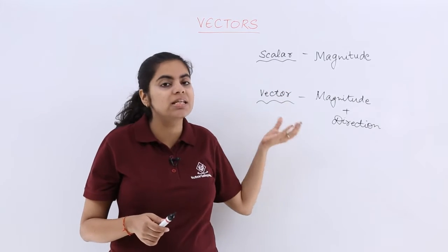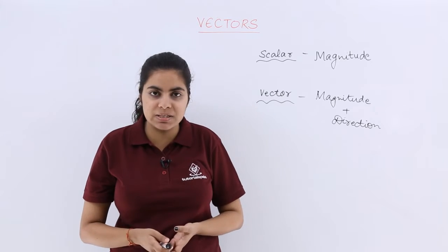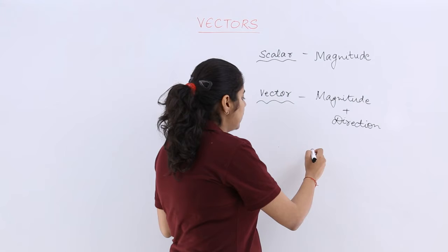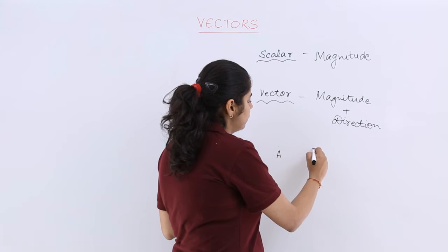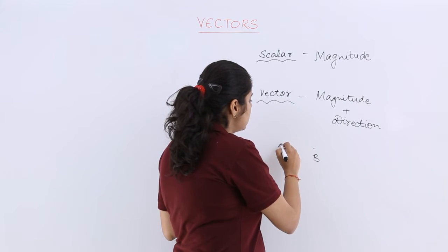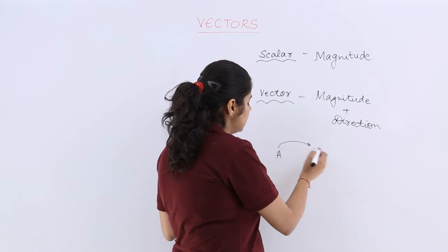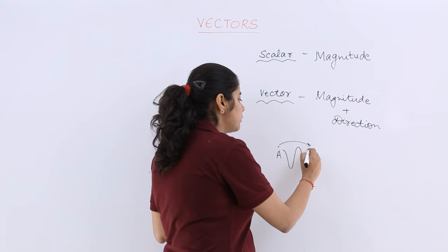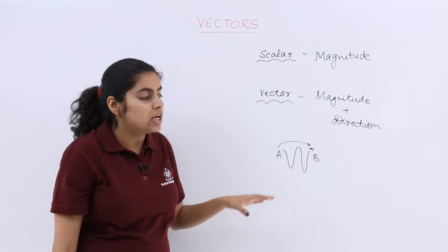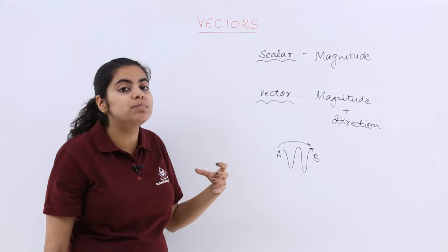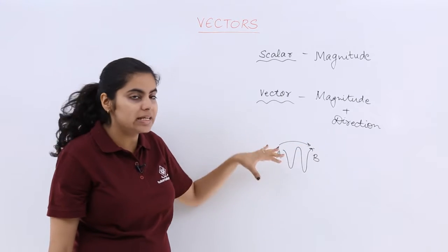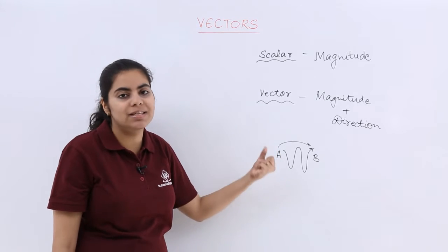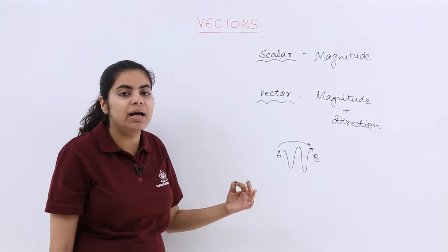Vectors are quantities which have direction associated along with magnitude. If there is a point A and a point B, from A to B I can either go towards the right-hand side, or I can choose a zigzag path — those are two paths. So definitely direction is involved, because I am going towards the right-hand side or along the zigzag path, and the magnitude is also there, say 2 km or 3 km.